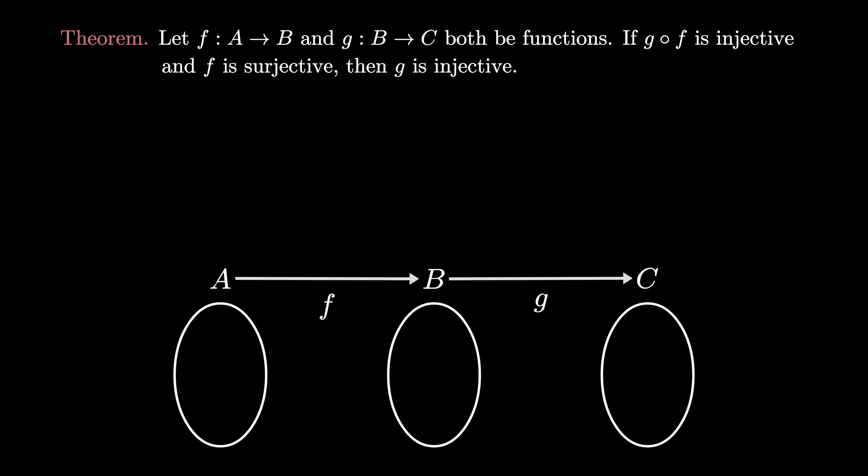then the theorem we want to prove is that if g∘f is injective and f is surjective, then g is injective. In order to do this, we first need to revisit the definitions of injectivity and surjectivity for functions.